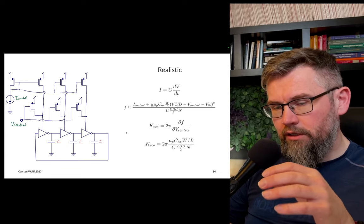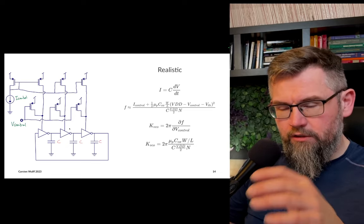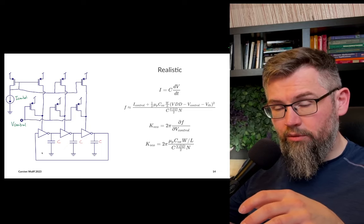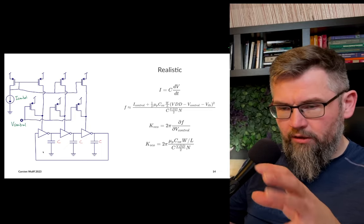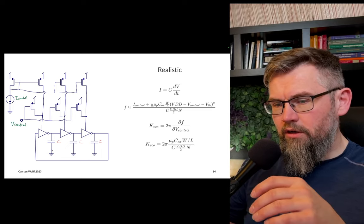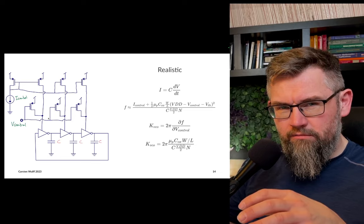If you wanted to try a ring oscillator, start with something like this. It's also possible to do symmetric, so you can actually feed in current mirrors on both sides, but it becomes a bit more complicated than you have a floating ring oscillator. But try this first.